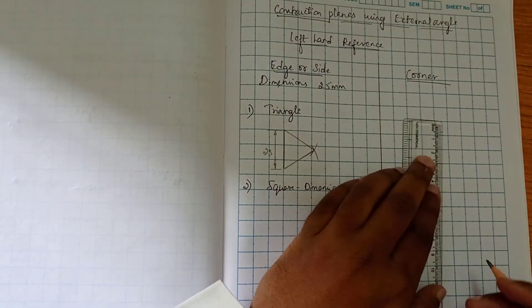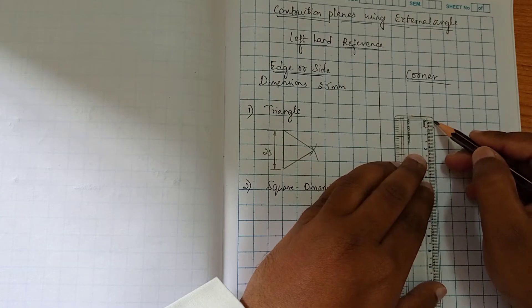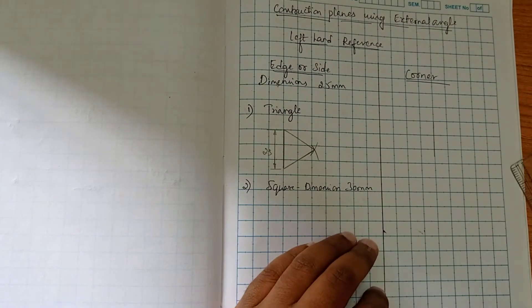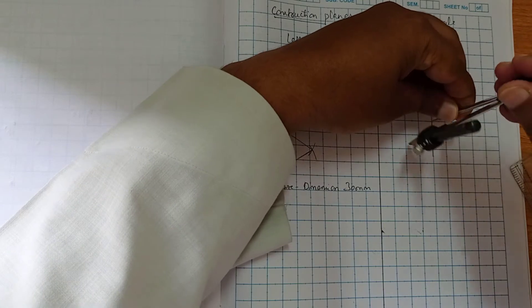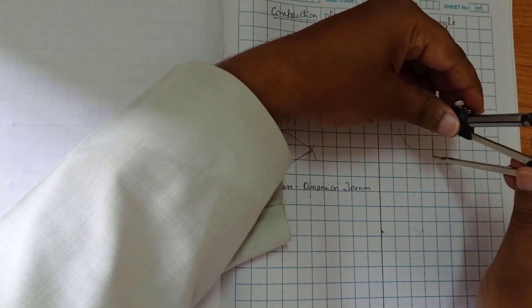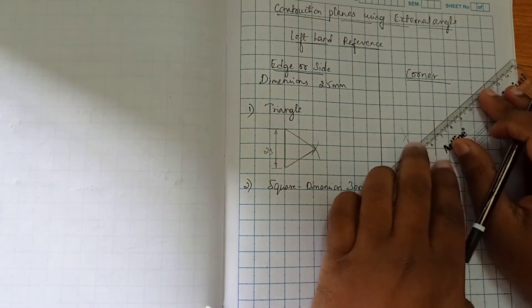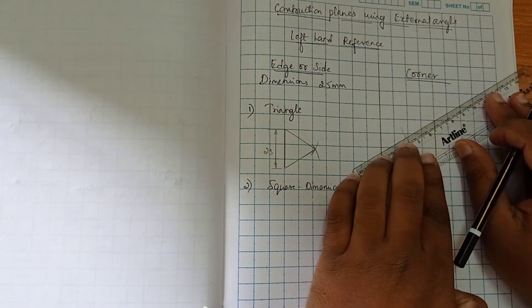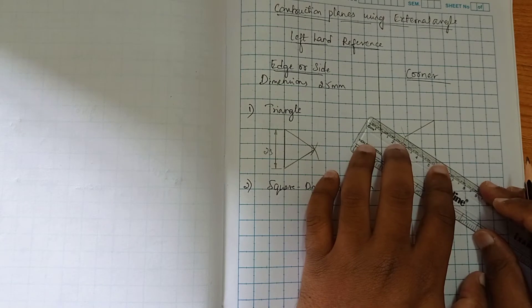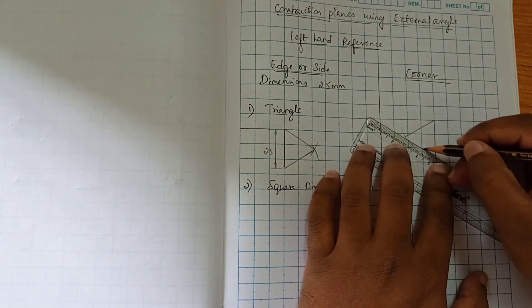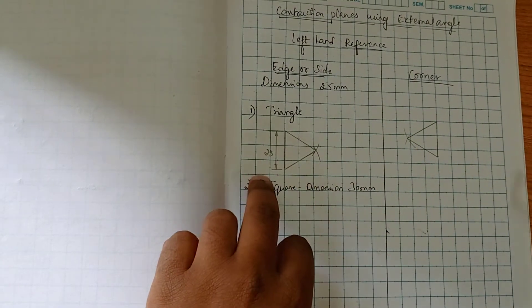Now similarly we are going to construct the triangle with respect to the corner. Same dimension of 25 — two and a half arcs, same procedure. We have already measured 25 mm using the compass. From one end cut one arc, from the other end cut the respective arc, then where the arcs intersect, just join it. This is the construction of a triangle using the arc method — it is easy compared to using an angle. Construction of the triangle with respect to edge and corner is done.